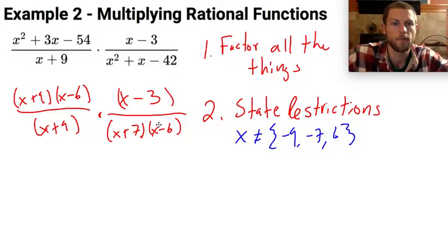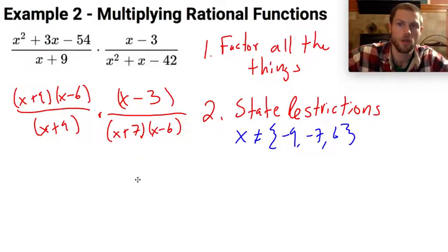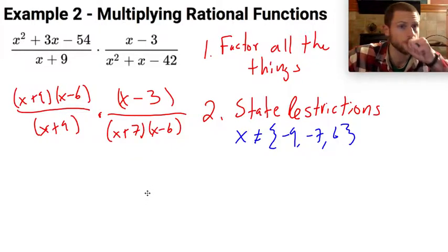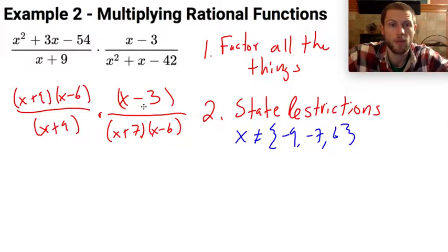Next up, we can think about this one of two ways. You can either think we're going to multiply them together and then reduce, or we can make our lives easier and we can just reduce right now. Any common factors in the numerator and the denominator, it doesn't matter which fraction they're in, I can reduce them.